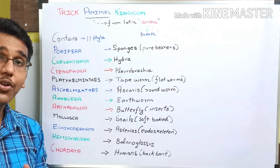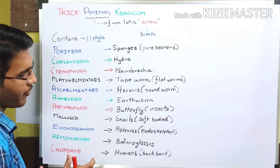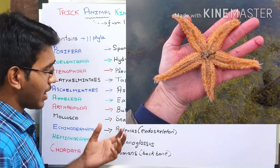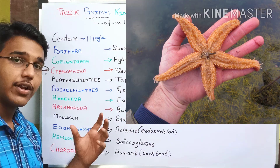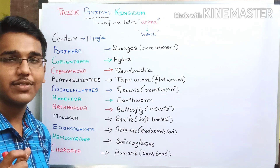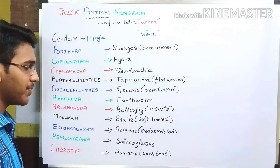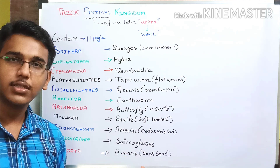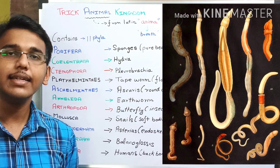Next we have phylum Echinodermata. An important example of Echinodermata is Asterias. The important characteristic feature of echinoderms is the presence of an endoskeleton. Next we have phylum Hemichordata. The example of Hemichordata is Balanoglossus.